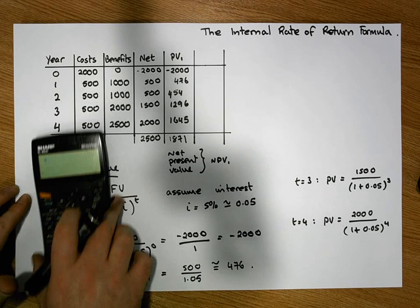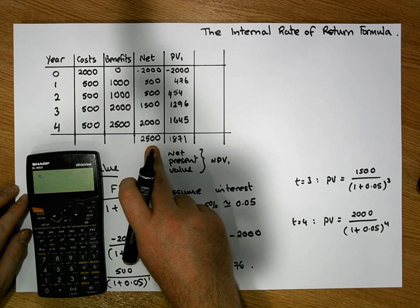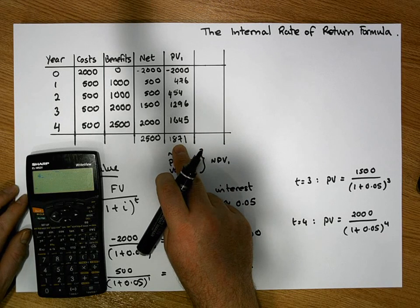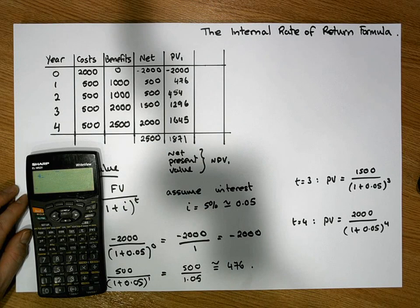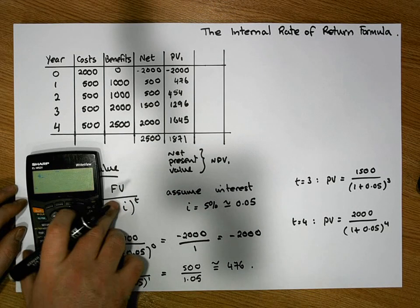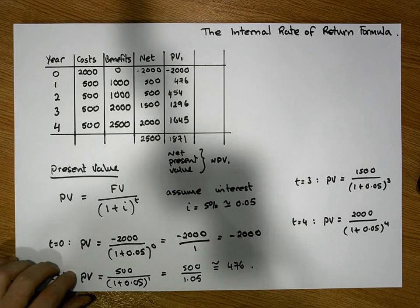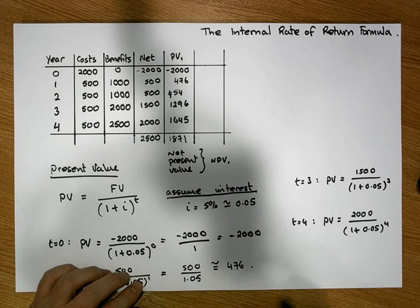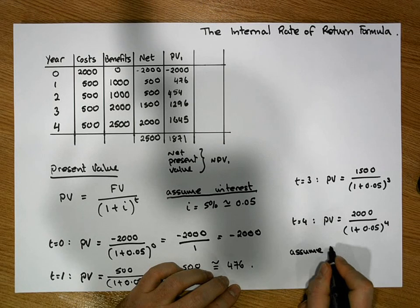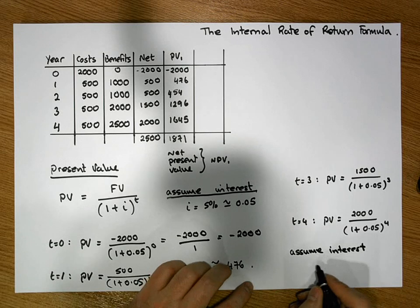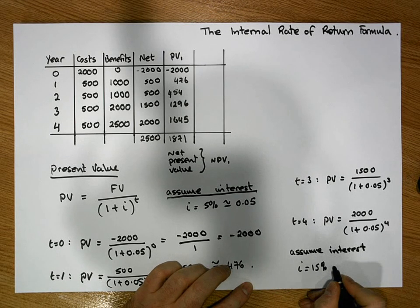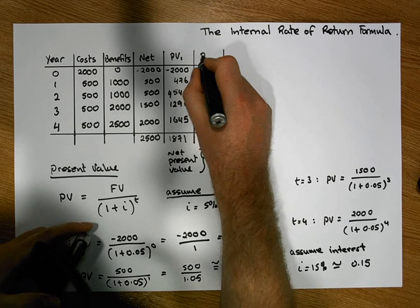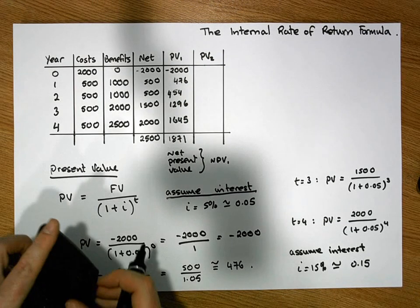Now we can compare our net present value at 5% to our naive calculation. In today's terms, this project will only make a profit of €1,871, not the €2,500 expected from a naive perspective. Let's do the calculation once more but with a different interest rate. This time we'll assume i = 15%, or 0.15, and recalculate all the present values — call this PV2.